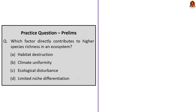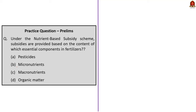The next question asks which factor directly contributes to higher species richness in an ecosystem. The correct answer is option C — ecological disturbance. Ecological disturbance can create opportunities for different species to colonize an area, leading to an increase in species richness. Disturbances can break competitive dominance and allow new species to establish themselves. The final question asks: under the nutrient-based subsidy scheme, subsidies are provided based on the content of which essential component in fertilizers? The correct answer is option C, macronutrients — that is, primary nutrients required in relatively large amounts like nitrogen, phosphorus, and potassium.